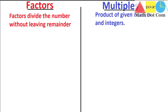Hello everyone, today we are going to learn the difference between factors and multiples in maths. First of all we have the factors. The definition is: factors divide the number without leaving a remainder. This means factors are those numbers that divide the given number with zero remainder.